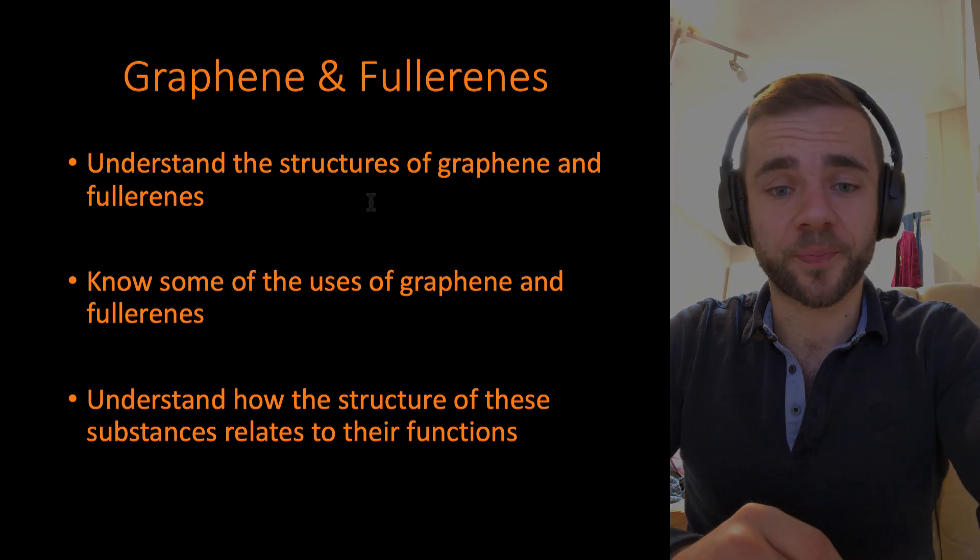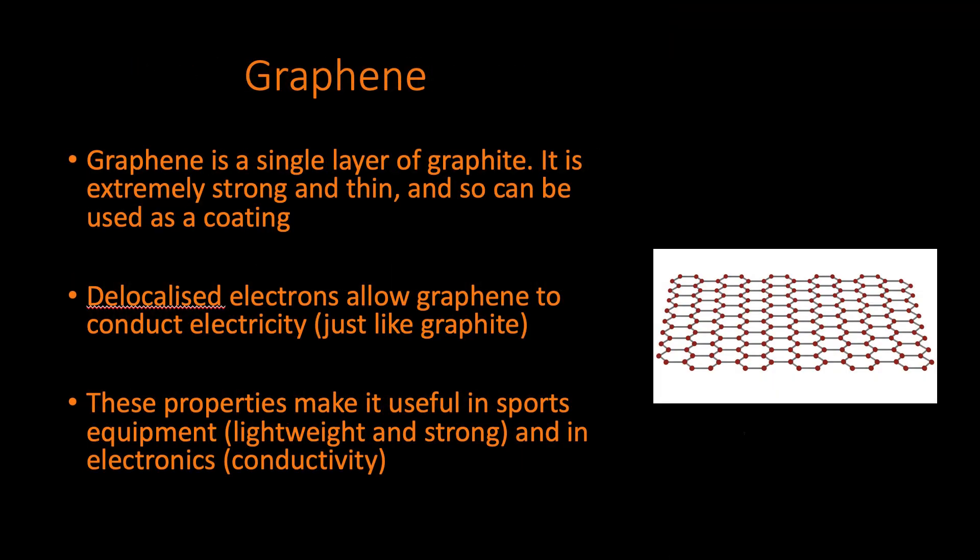Let's dive straight into that. First, we're going to look at graphene. Graphene is basically a single layer of graphite. You should already know the structure of graphite—hexagonal layers of carbon atoms bound in hexagonal rings that form layers.